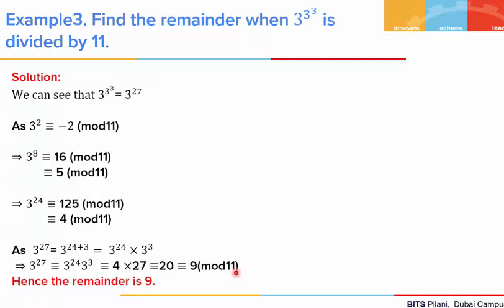In example 3, we are asked to find the remainder when 3 to the power 3 to the power 3 is divided by 11. Such terms are known as towers of powers. We note that 3 to the power 3 to the power 3 is nothing but 3 to the power 27, since 3 to the power 3 is 27. Now, 3 squared is 9, and 9 is congruent to minus 2 mod 11. Raising both sides to the power 4, we get 3 to the power 8 is congruent to minus 2 to the power 4, which is 16, and 16 is congruent to 5 mod 11.